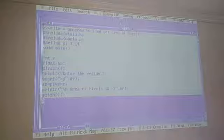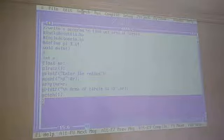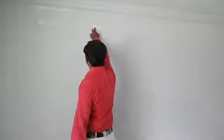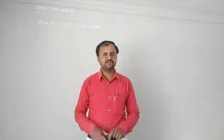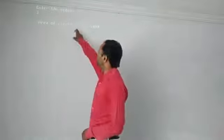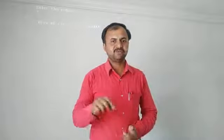Firstly, go to compile — there are no errors or warnings. Go to run and execute the program. Enter the radius: 3. The area of the circle is 28.26. This answer is obtained because PI=3.14, r=3: 3.14 × 3 × 3 = 28.26. This is the correct answer for finding the area of a circle using the PI value 3.14.